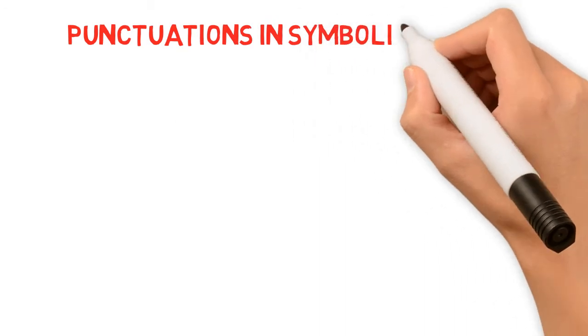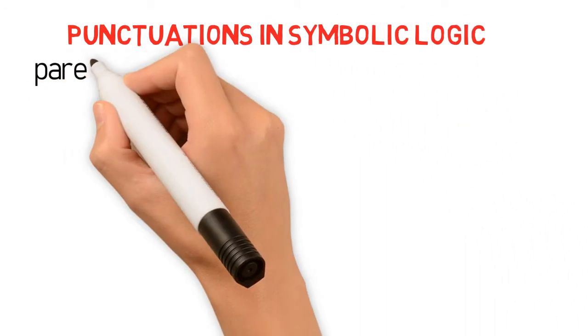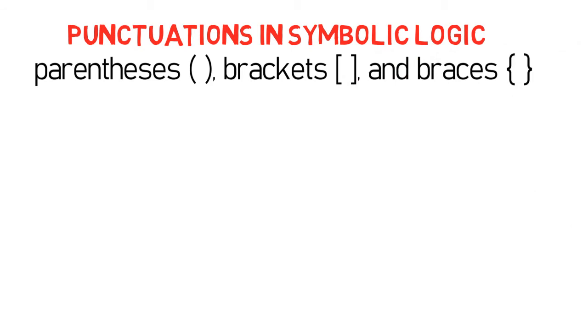So basically, symbolic logic uses parentheses, brackets, and braces as punctuation symbols. And so, the rule of thumb in logic is to use parentheses first, and then brackets, and braces.